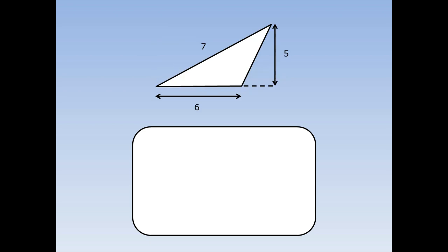In this triangle, the base is 6 and the perpendicular height is 5. They've also put in the slope as well, which is 7 — but this is just included to fool you, because we don't actually need the 7 at all. Write out the formula: area of a triangle is base times perpendicular height divided by 2. The base is 6 and the height is 5. 6 times 5 is 30, and 30 divided by 2 is 15 centimetres squared.